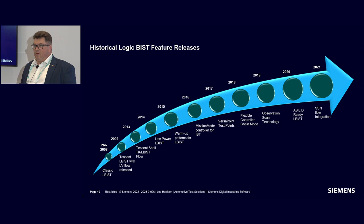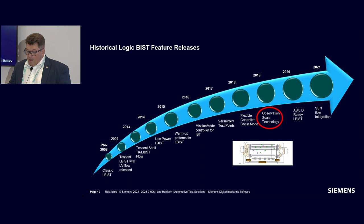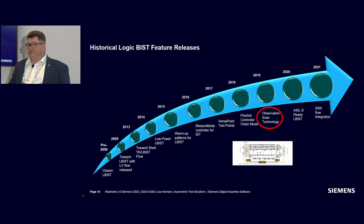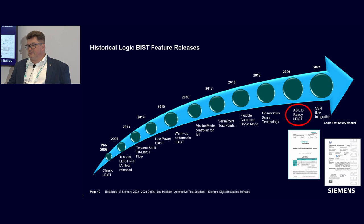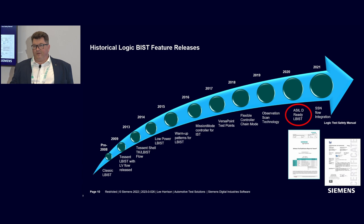Looking at the historical roadmap for Logic BIST, you can see it has very much migrated towards an automotive-focused solution. Back in 2019, we introduced a technology called Observation Scan to reduce overall test time and address challenges with large numbers of Logic BIST patterns. In 2020, we put the BIST IP through full certification to ensure customers using our in-system test technology can do so with a high level of confidence, knowing they have a safe solution to start with.